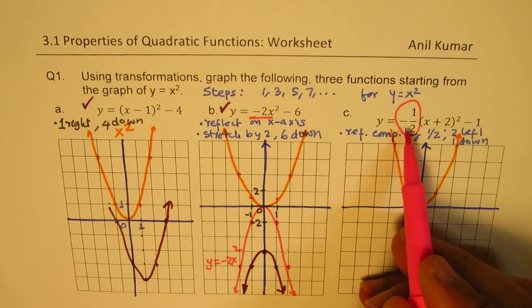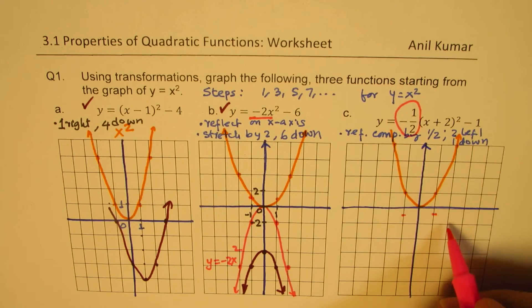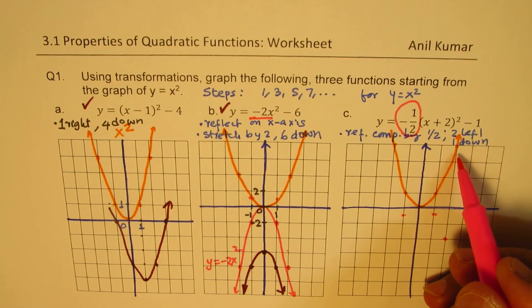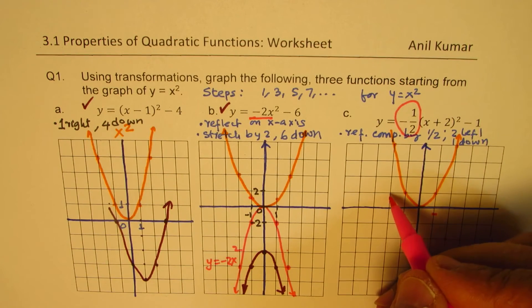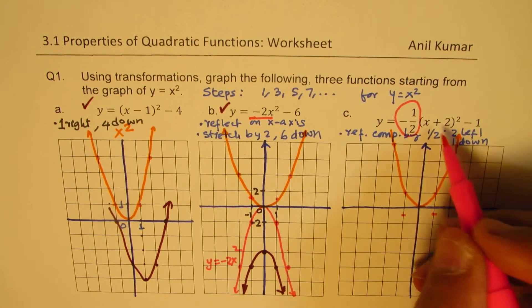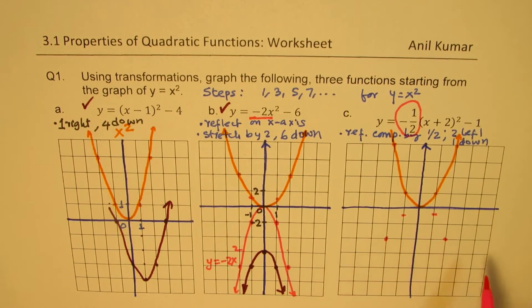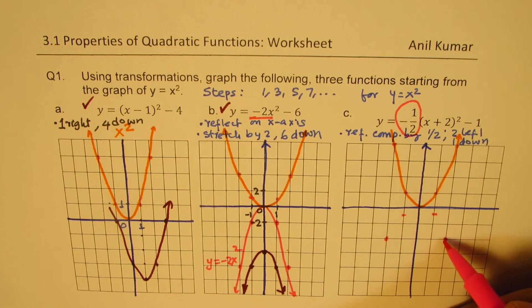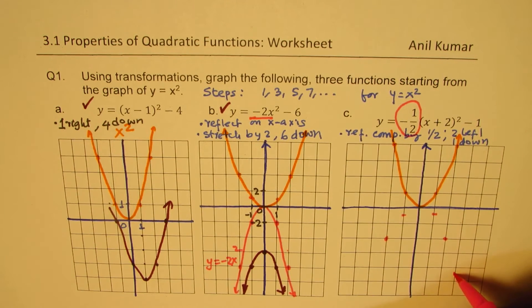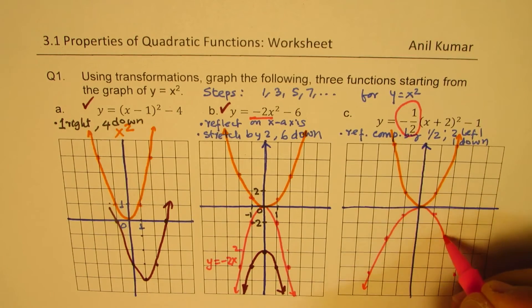Now we incorporate the reflection and half compression together. Every point gets multiplied by negative one-half, so instead of going 4 up we go 2 down. Four times minus half is minus 2, so we get minus 2 here. When x=3, x squared is 9, and half of 9 is 4.5, so that becomes the next point. We get a graph opening downward, compressed — this is y equals minus half x squared.